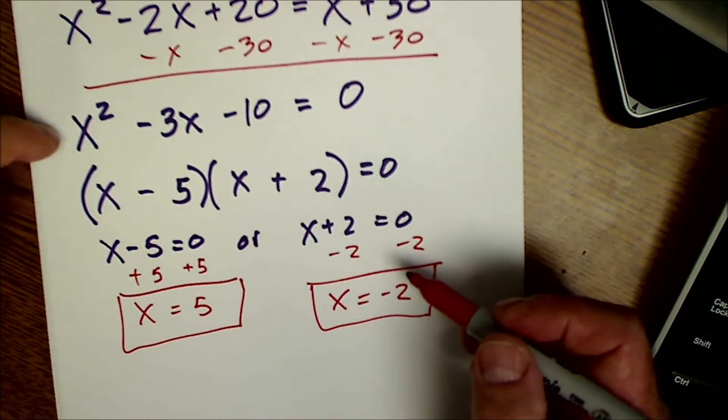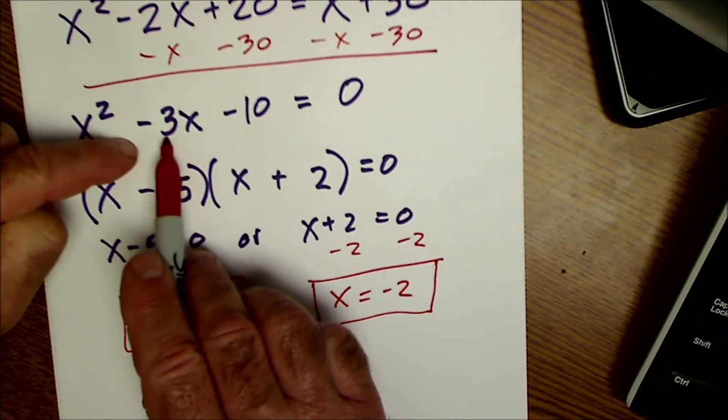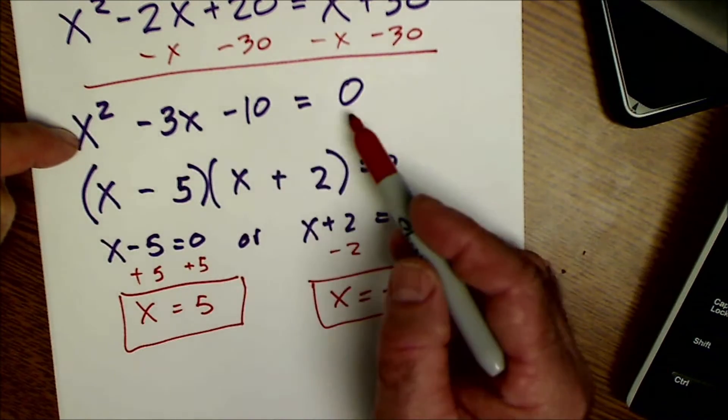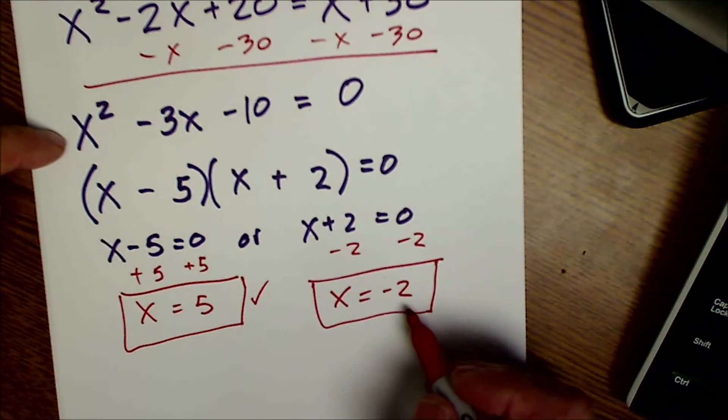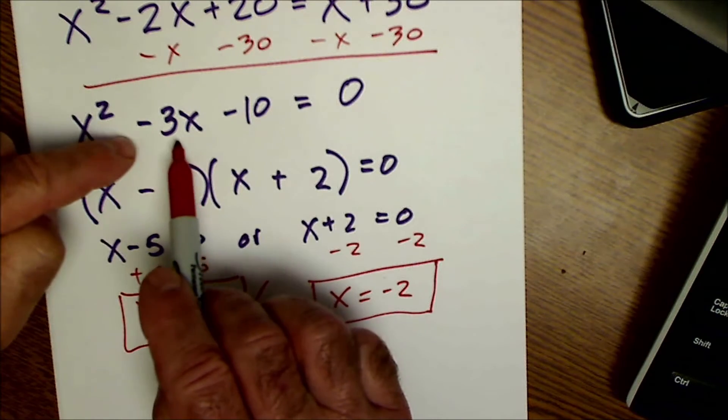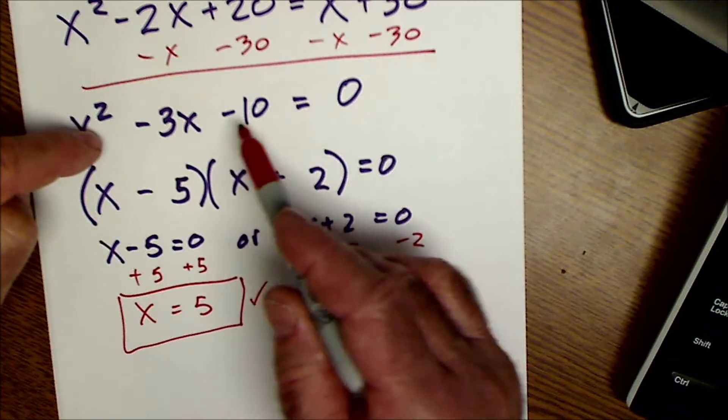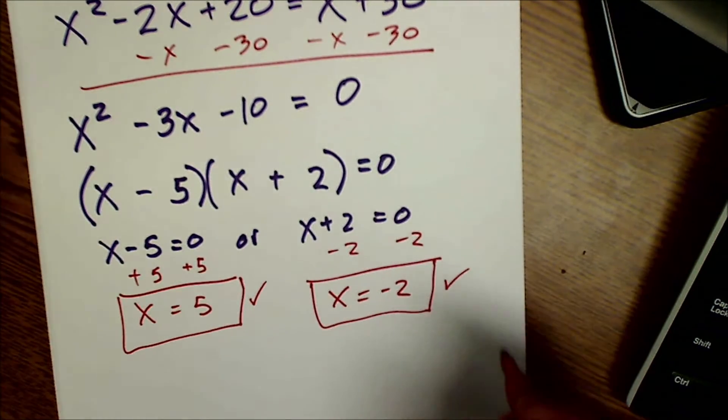I could take those and plug them back in and make sure it works. 25 minus 15 minus 10 is equal to zero. That one works. Or I could take this one and plug it in. Negative 2 squared is 4 plus 6, right? Negative 2 times negative 3, 4 plus 6 is 10. 10 minus 10 is zero. That one works.